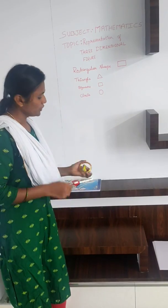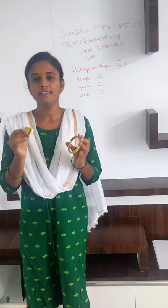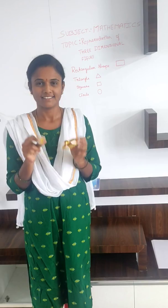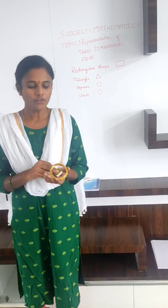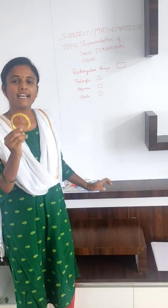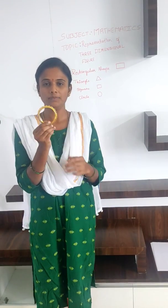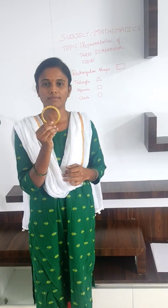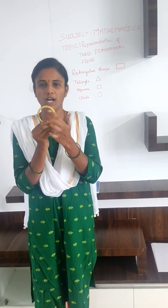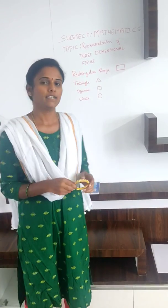Now, have you seen these objects anywhere? Yes. Now, tell me how many sides are there in a circle? One side. Yes, one side.